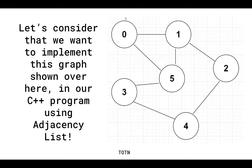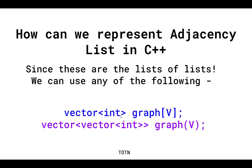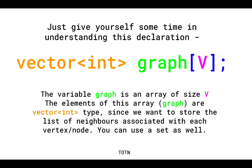Here v is the number of vertices. We have 6 vertices, so we will declare vector<int> graph[6]. The variable graph is an array of size v, where v is the total number of nodes. Each element of this array is of type vector<int> — not a simple number but a list — because we want to store the list of neighbors associated with each vertex. You can also use a set, but here we'll use vector<int> to represent the adjacency list.